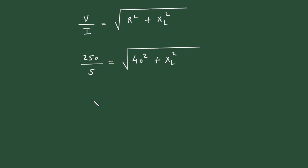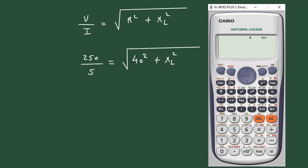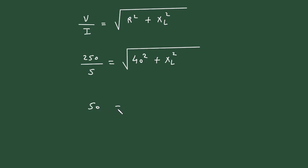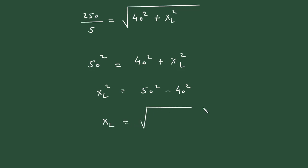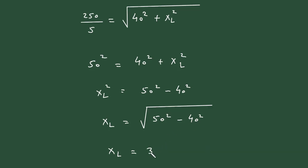If we square both sides, 250 divided by 5 is 50, so 50 squared is equal to 40 squared plus XL squared. Therefore XL squared is equal to 50 squared minus 40 squared. Therefore XL is equal to the square root of 50 squared minus 40 squared, which gives us 30. The unit of inductive reactance is Ohm.